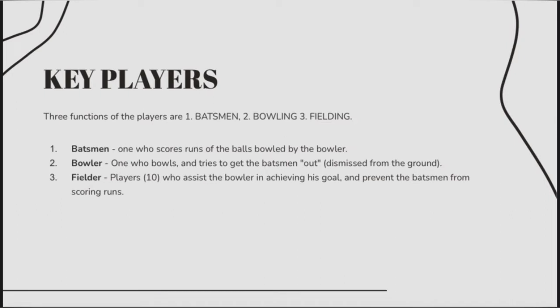Coming to the key players, there are three functions of players: batsmen, bowlers, and the fielding team. Batsmen are the ones who score runs off the balls bowled by the bowler. The bowler is the one who bowls and tries to get the batsman out, dismissed from the ground. The fielder is the other players, excluding the bowler, who assist the bowler in achieving his goal and prevent the batsmen from scoring runs.